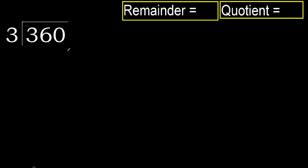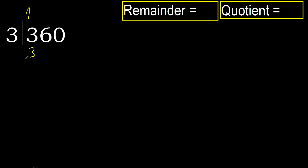360 divided by 3. 3 is not less, therefore work with 3. 3 multiplied by which number is nearest but not greater? 3 multiplied by 2 is 6 — 6 is greater. 3 multiplied by 1 is 3, which is not greater.